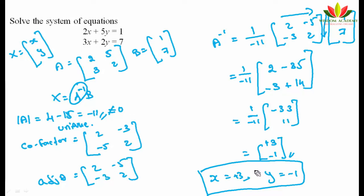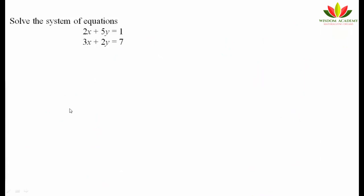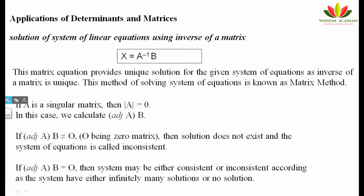So this is how we solve equations using the matrix method. Now, what happens if |A| = 0? If the determinant is 0, A⁻¹ does not exist — we cannot find the inverse. In this case, compute adj(A) × B. If adj(A) × B is a non-zero matrix, then the solution does not exist and the system of equations is called inconsistent.